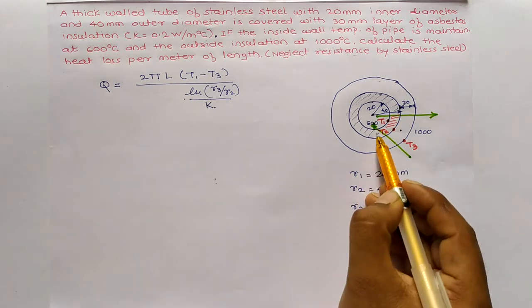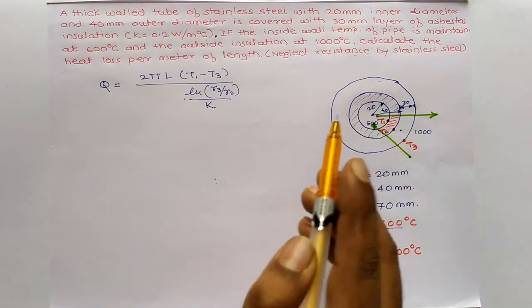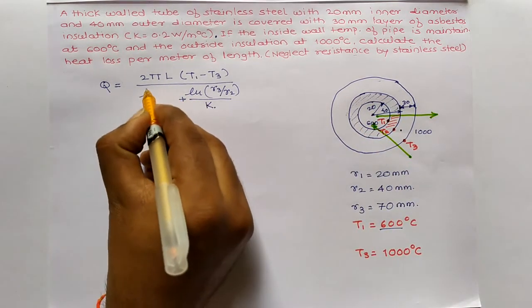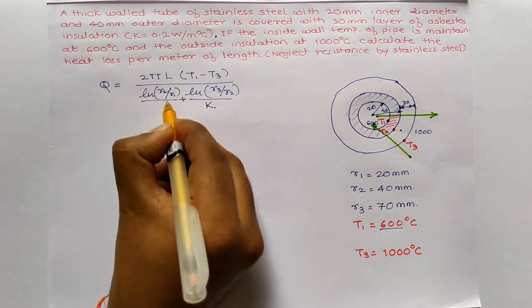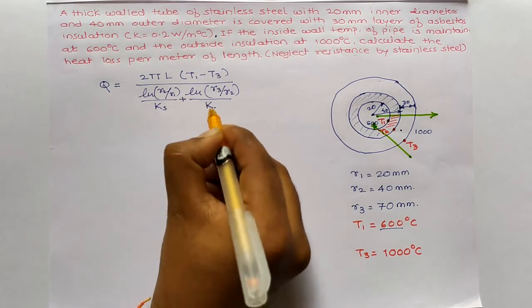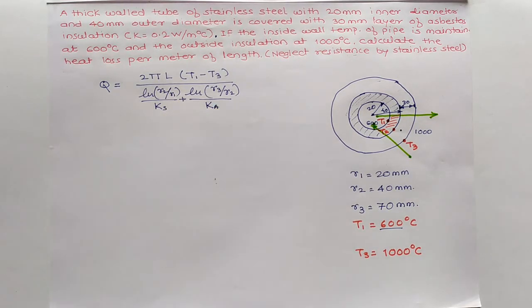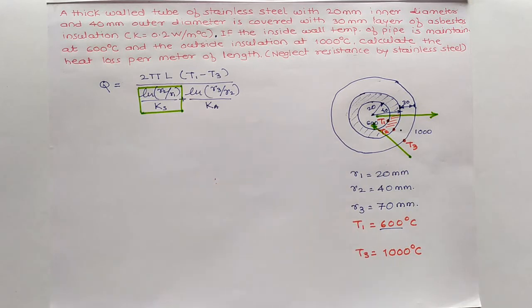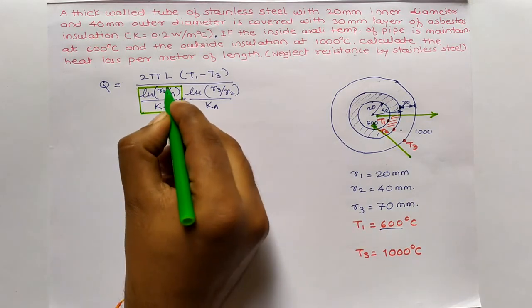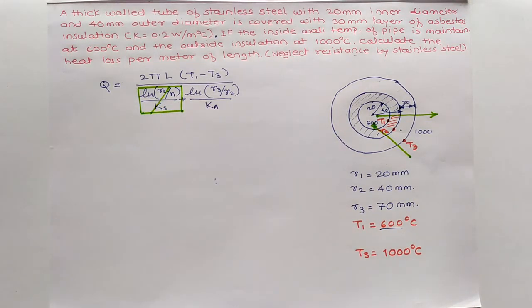So, if it is not neglected, then my formula should be, in this way, ln of R2 divided by R1 divided by K of steel. Here, K of asbestos. And they have given, what they have given? Neglect this. Neglect the resistance offered by stainless steel. So, I will skip this term. And my new formula is of this one.